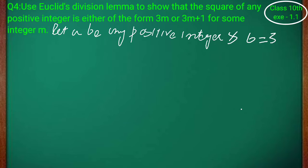Question کہہ رہا ہے guys کہ اگر ہم کسی بھی positive integer کا square کریں گے، وہ یا تو 3m کی form میں ہوگا یا 3m plus 1 کی form میں ہوگا، جہاں پر ہمارا m کوئی integer ہوگا۔